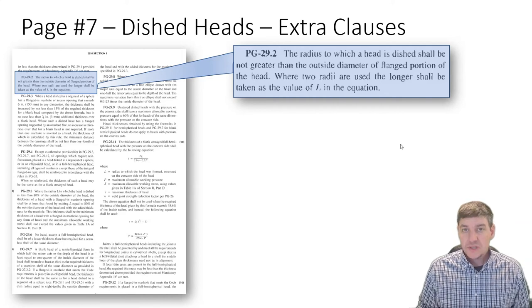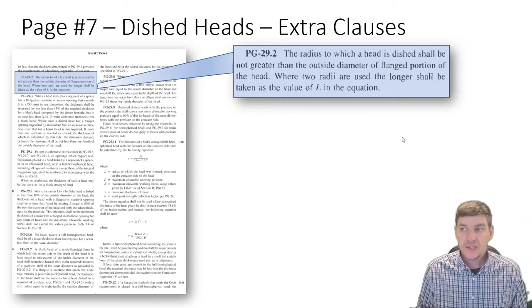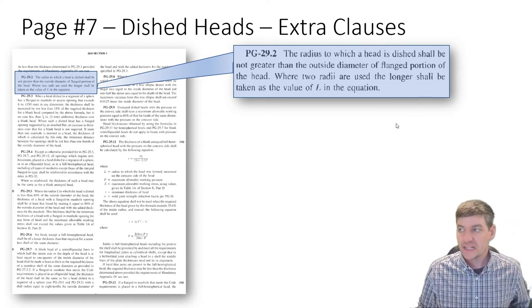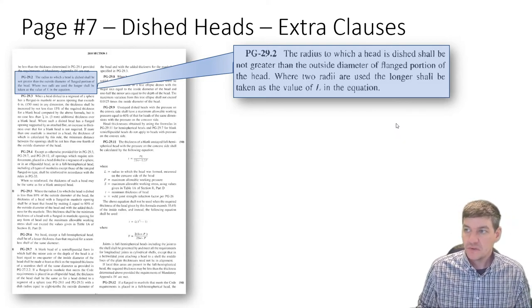PG 29.2: the radius to which a head is dished shall be not greater than the outside diameter of a flanged portion of the head. Where two radii are used, the longer shall be taken as the value of L in the equation.